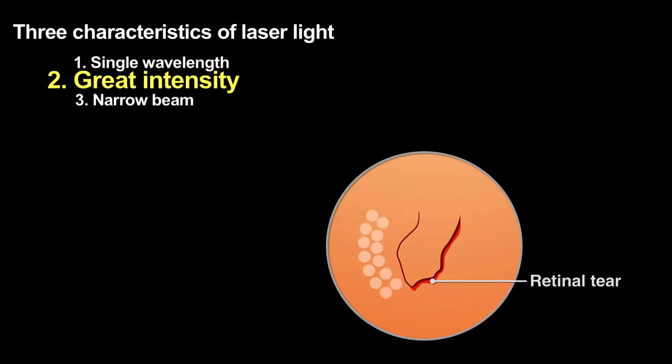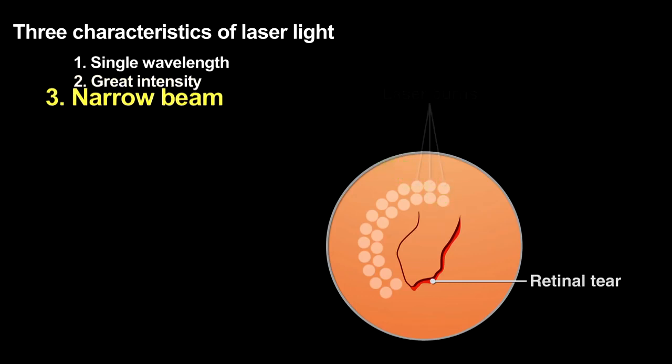The laser beam then strikes the retina where the tissue strongly absorbs that light, using the high-intensity light to weld the detached retina back into place. The beam's narrowness allows the surgeon to affect only the area of the retina that needs to be repaired, areas as small as 30 microns.